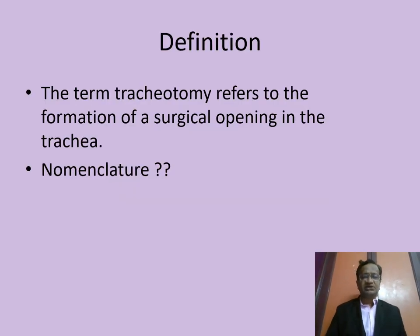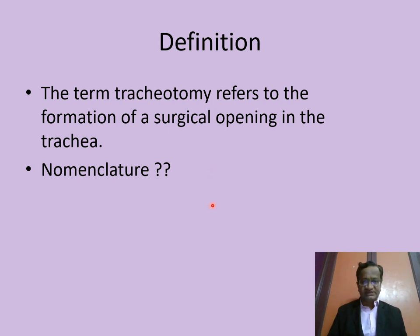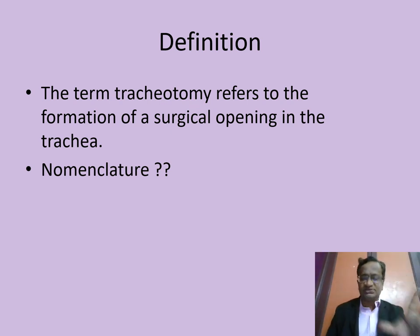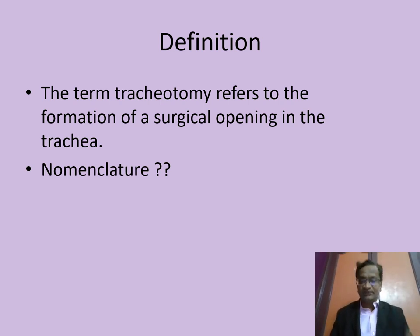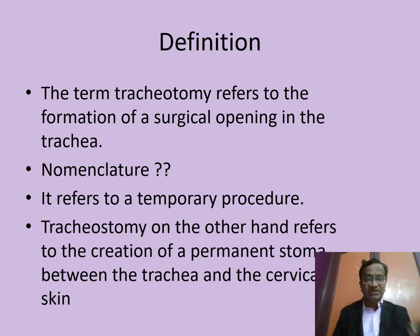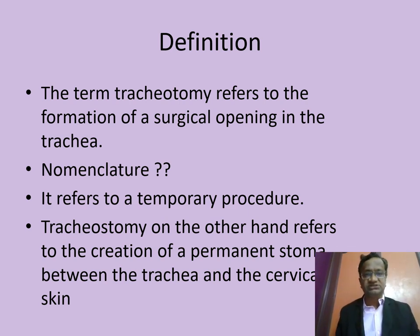What is tracheostomy? Tracheotomy refers to the formation of a surgical opening in the trachea. When the suffix '-ostomy' is used, it relates to connection between the skin — like gastrostomy, jejunostomy — and when continued with '-ostomy,' it becomes a permanent stoma between the trachea and the cervical neck skin. That is what is called tracheostomy — the difference between tracheotomy and tracheostomy.